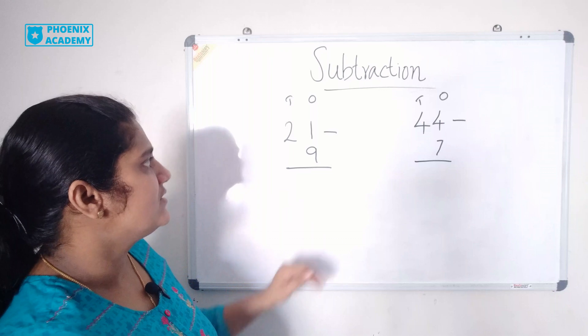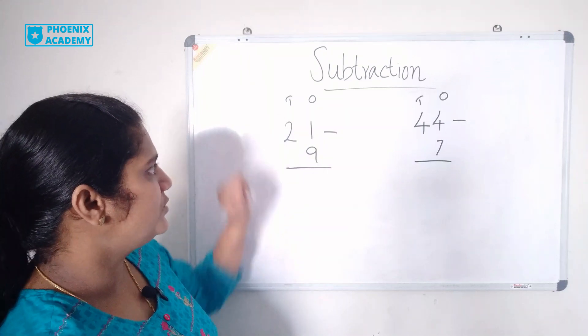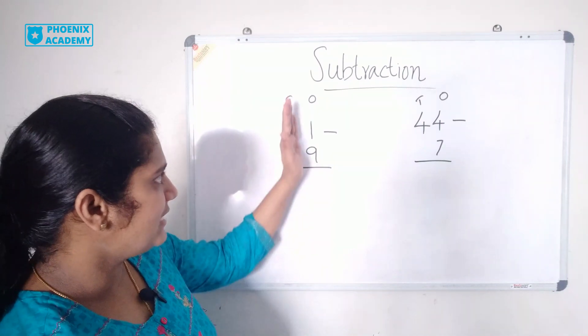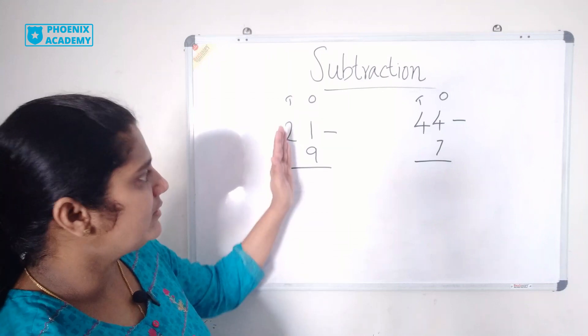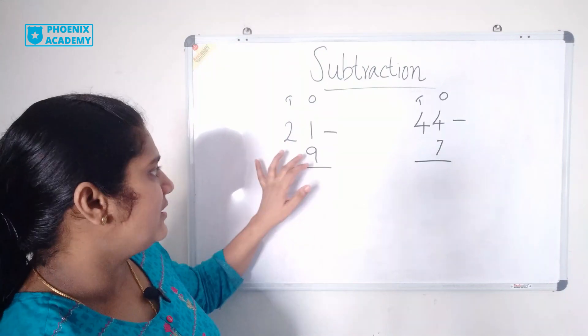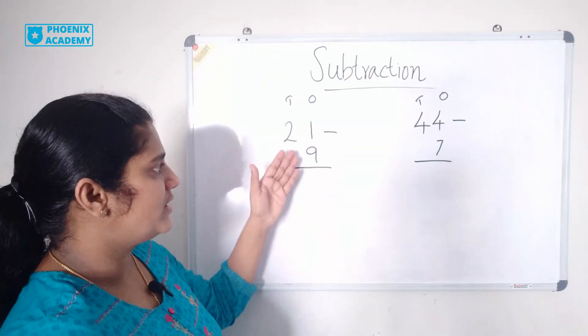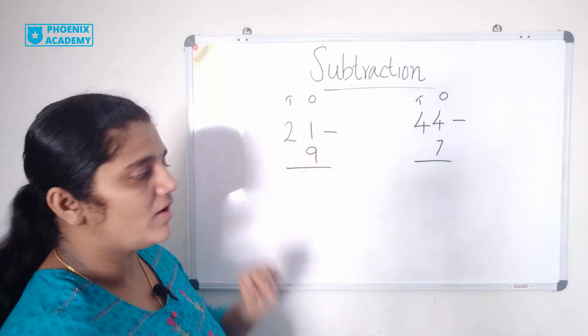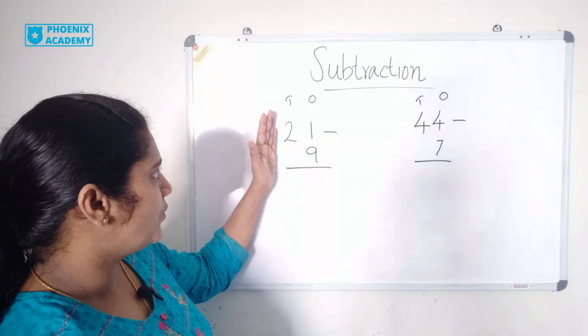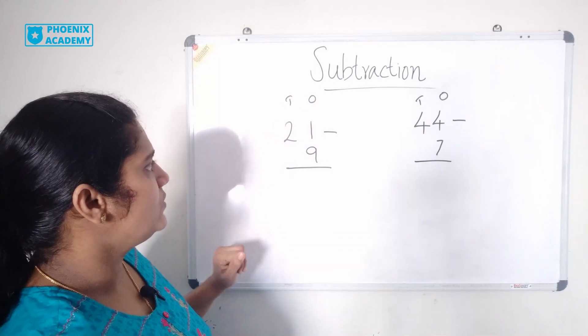21 is 1 ones and 2 tens. We will subtract ones values. 1 minus 9. 9 is a bigger number so we cannot subtract 9 from 1.